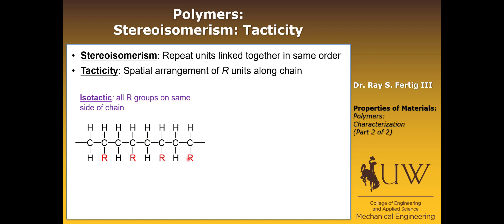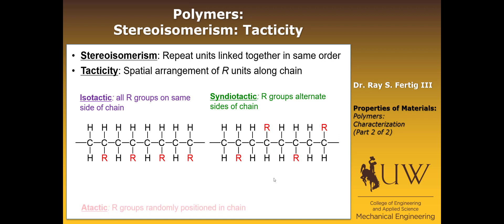If all the R groups reside on the same side of the chain, we call that isotactic. If in contrast, they are alternating on the side, so this monomer has an R on this side and then in the connecting monomer we have an R on the other side of the chain, we call that syndiotactic. And then there's a third group called atactic, which is just where all the R groups are randomly positioned in the chain.